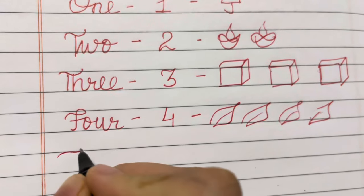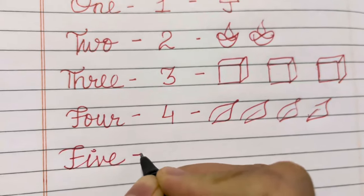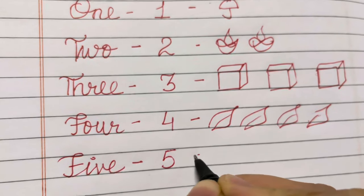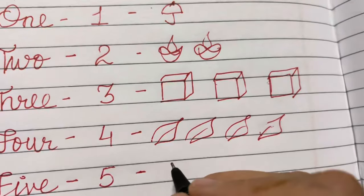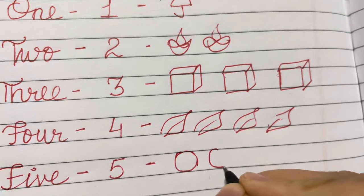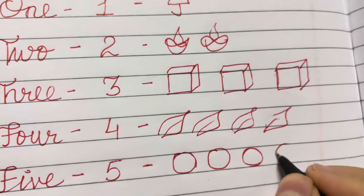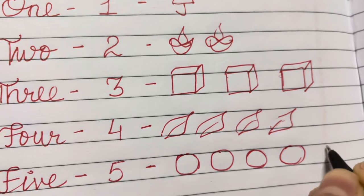Five. F, I, V, E. Five. Five circles. One, two, three, four, five.